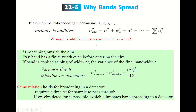Band broadening mostly occurs inside the column, but outside the column there is also band broadening. For example, the band has a finite width even before entering the column. When you inject your mixture sample with a syringe, we assume that at the moment of injection all your sample is concentrated in an infinitely thin layer at the column entrance — but actually that is not true. Band broadening takes place in the injection port.